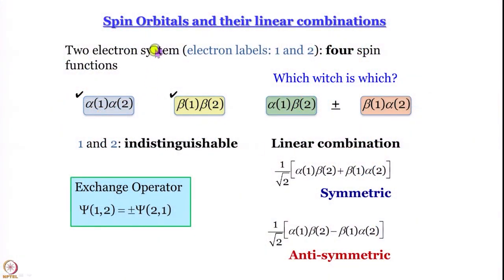Before going there, let us recall what we have learned so far about spin orbitals. A spin orbital is a one-electron wave function incorporating the spin part — it is as simple as that. An orbital is a one-electron wave function, and a spin orbital, in addition to the spatial coordinates, also has the spin part.